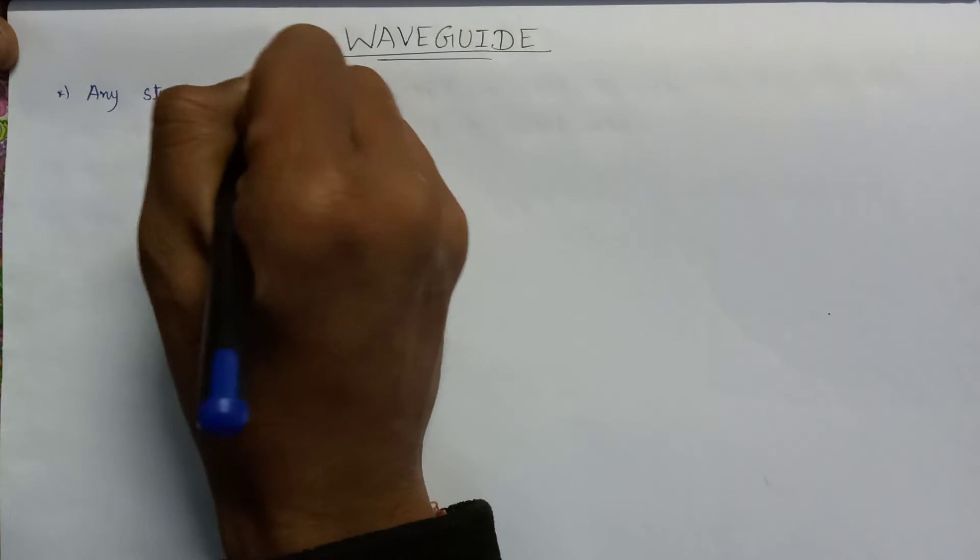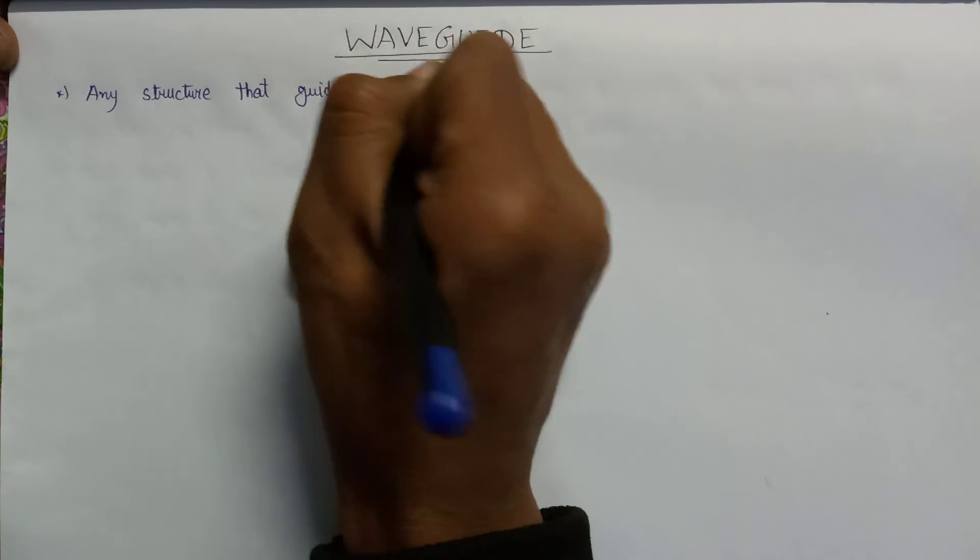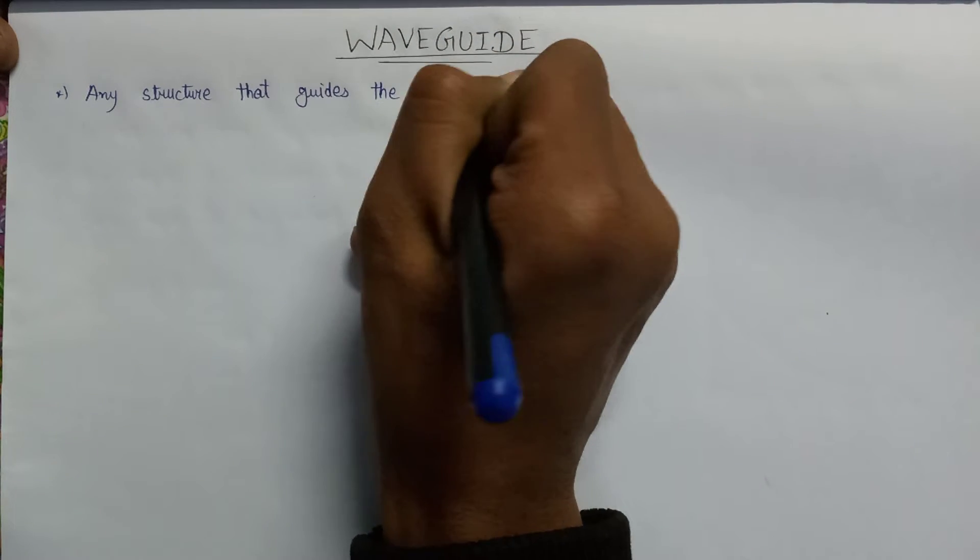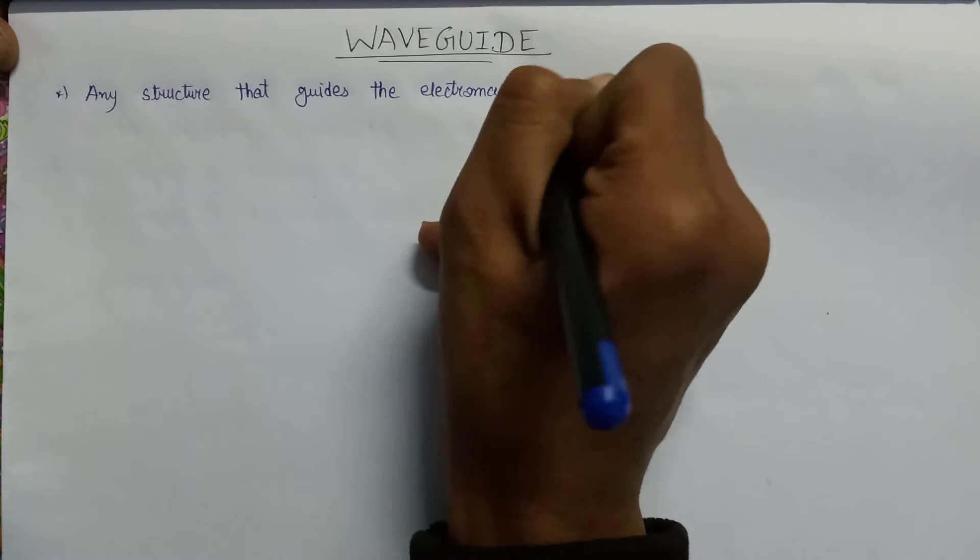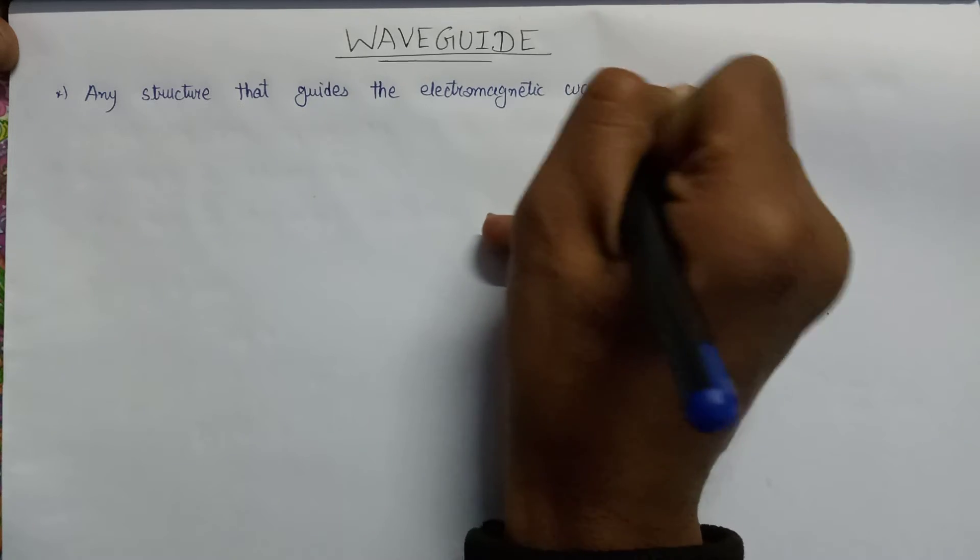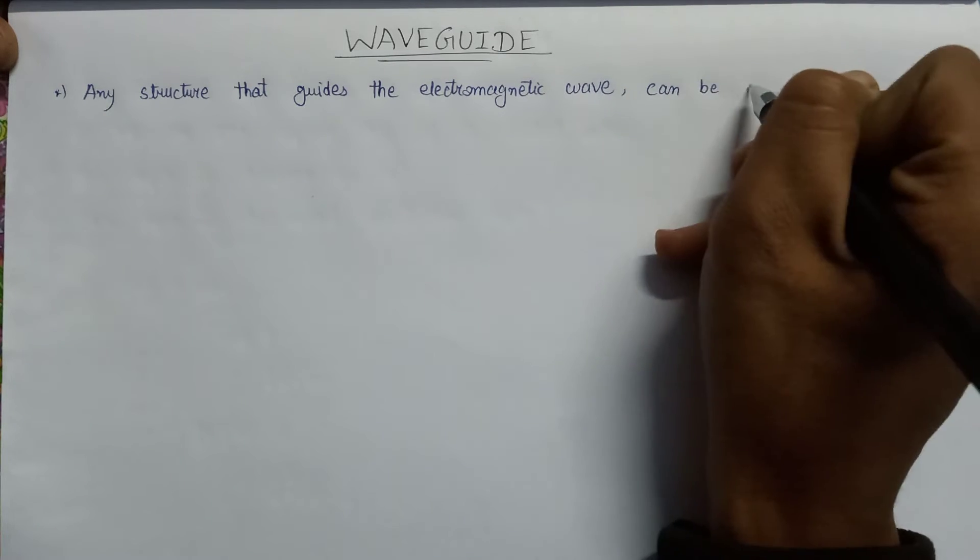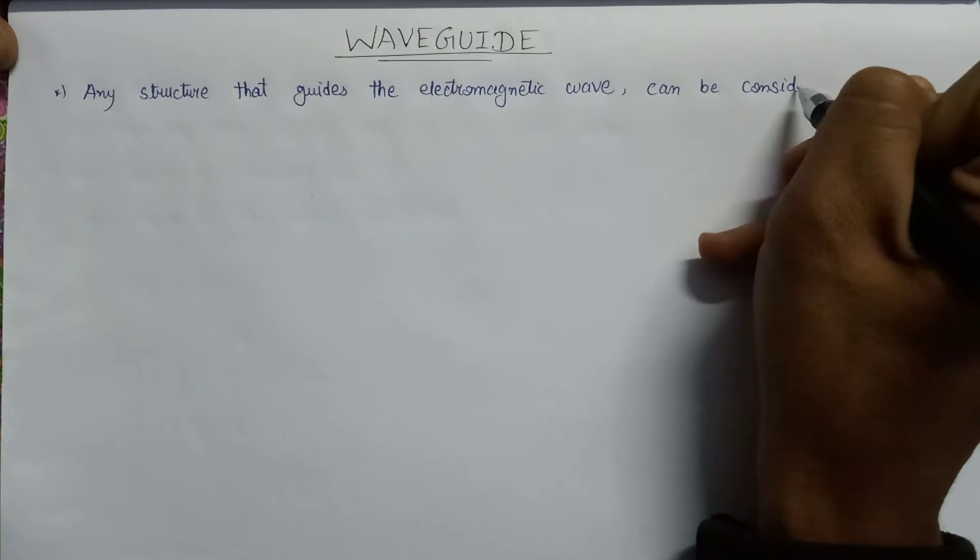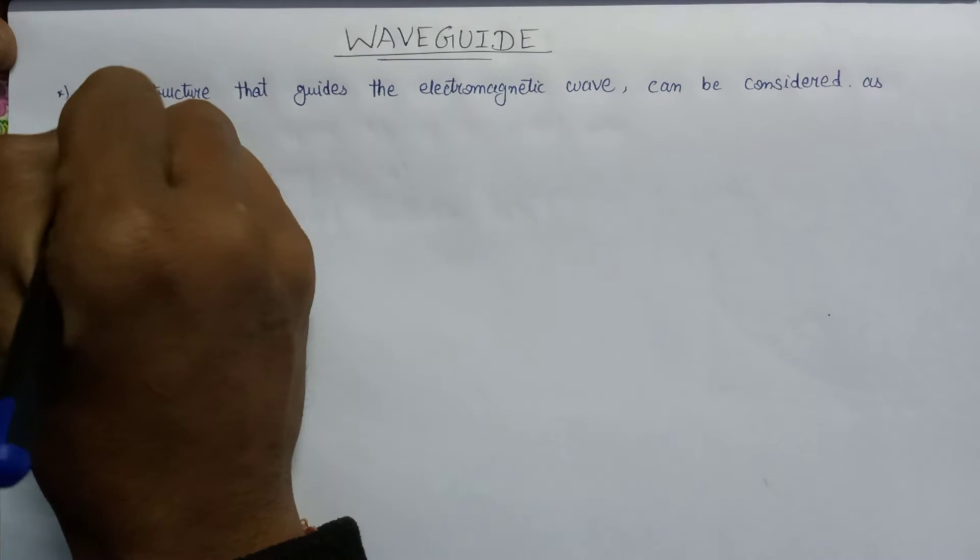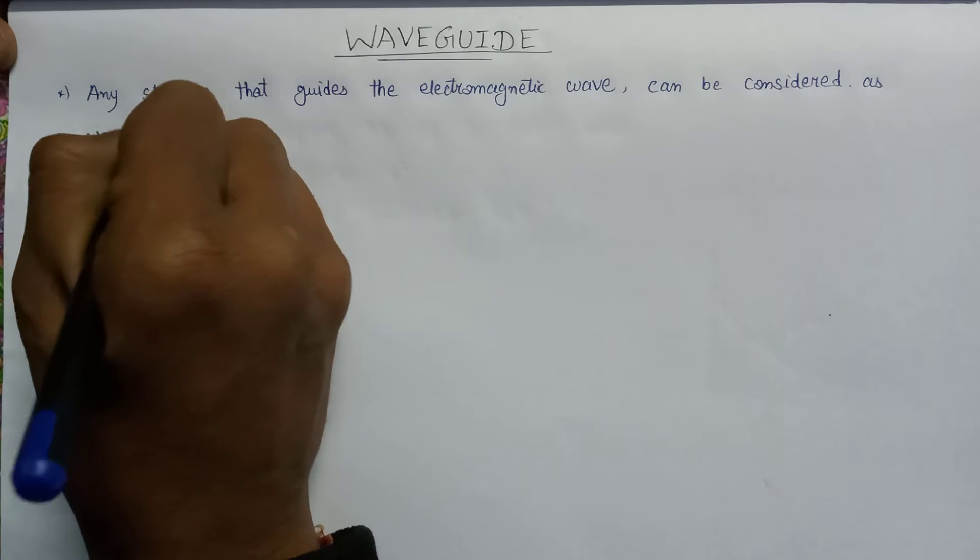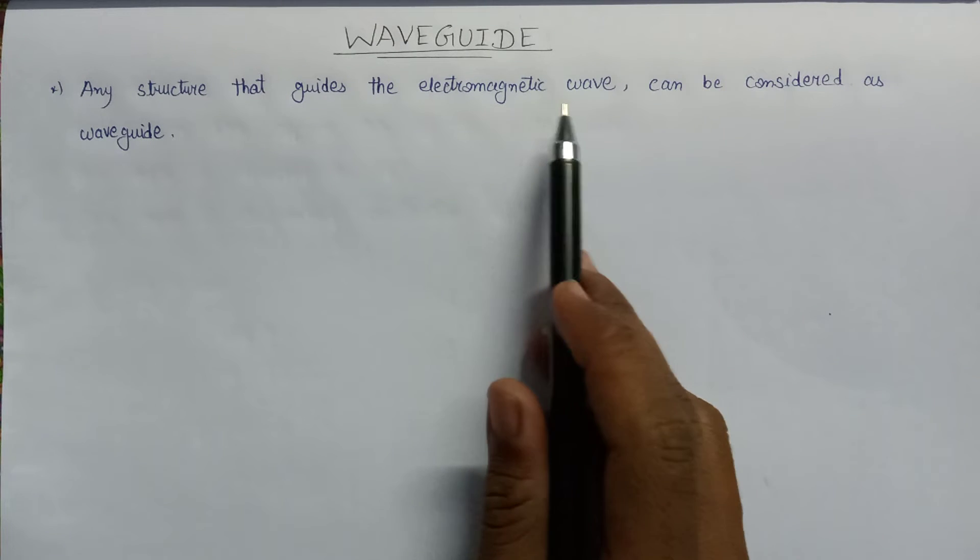Any structure that guides the electromagnetic wave can be considered as a waveguide. The basic functionality of the waveguide is guiding of the electromagnetic wave.